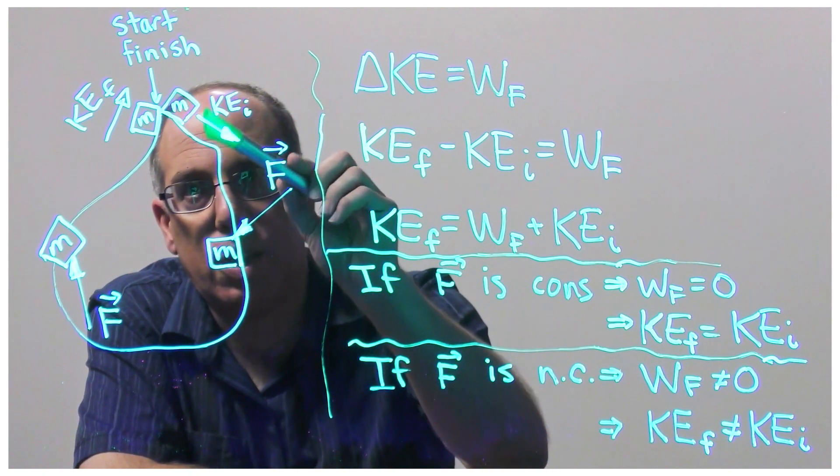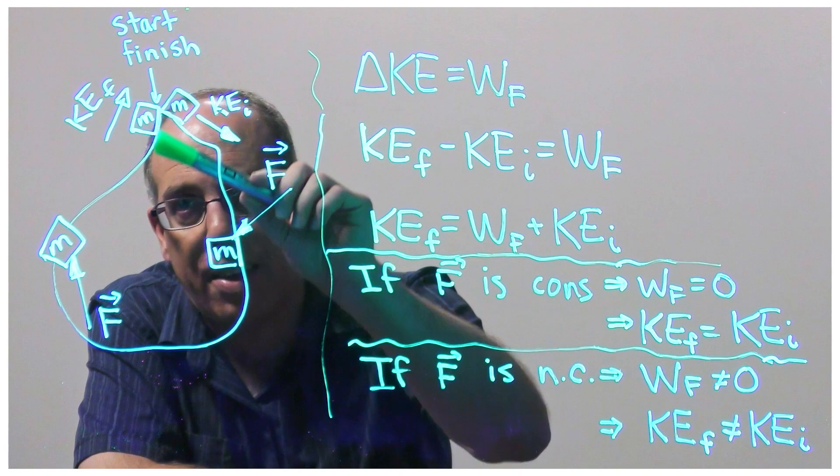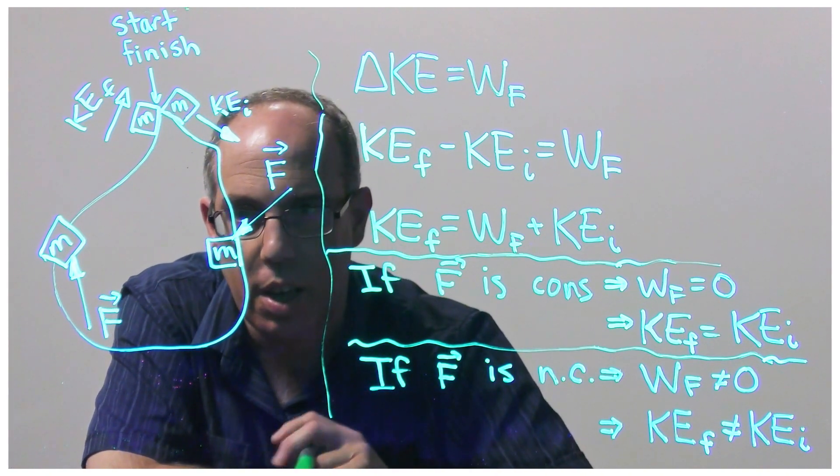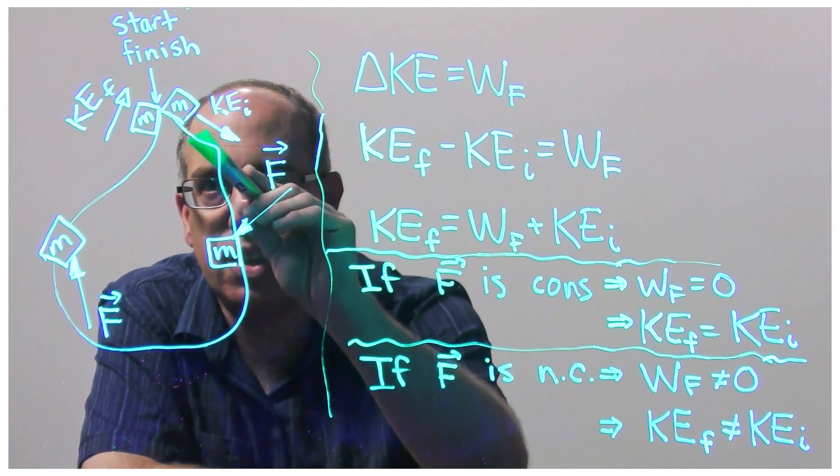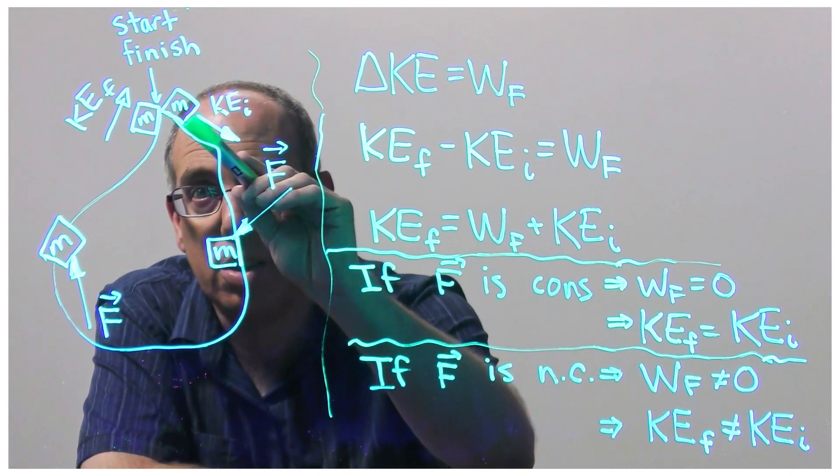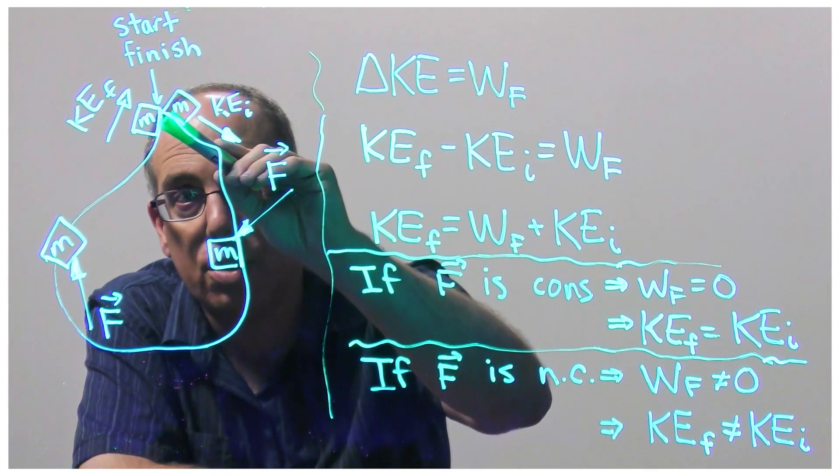The idea is that we take a mass and send the mass around a closed path while that force is acting on the mass. We then compare the kinetic energy of the mass at the beginning of the motion with the kinetic energy of the mass as it returns to the starting point.